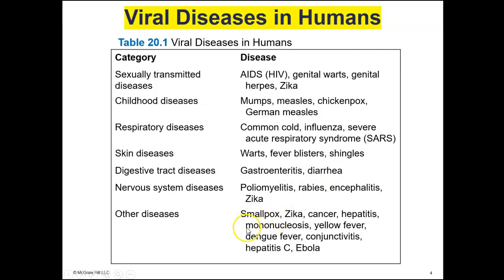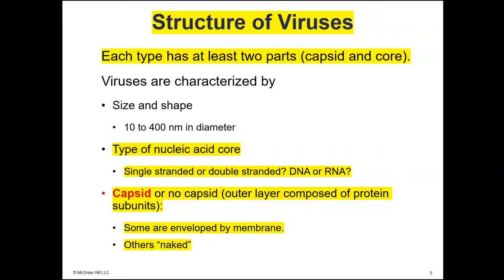Other diseases include smallpox, mononucleosis (or mono, sometimes called the kissing disease), gastroenteritis, and diarrhea — which are not always viral and can be bacterial. But most on this table are viral. As for the structure of viruses, you need to know that they have at least two parts: a nucleic acid core — either DNA or RNA — and a protein capsid. Sometimes outside the capsid there will be an envelope.